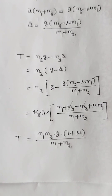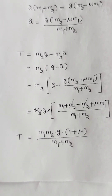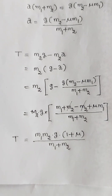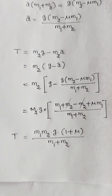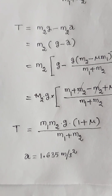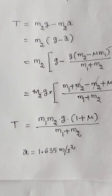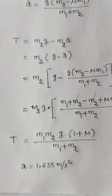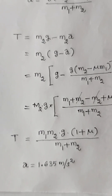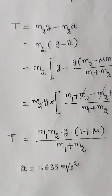According to the given problem, substituting M1 as 10 kg, M2 as 5 kg, and mu as 0.25, we get the acceleration of the system A equal to 1.635 meters per second squared, and string tension T equal to 40.875 Newtons.